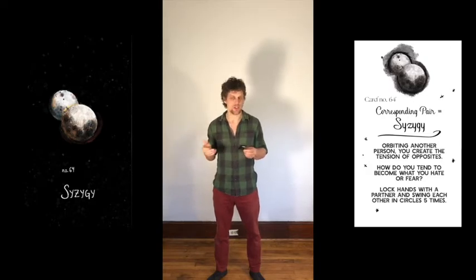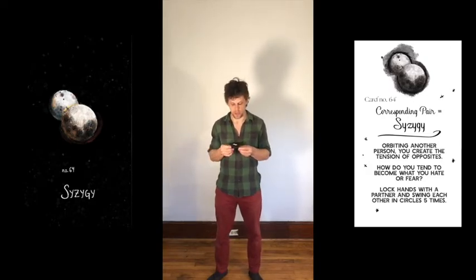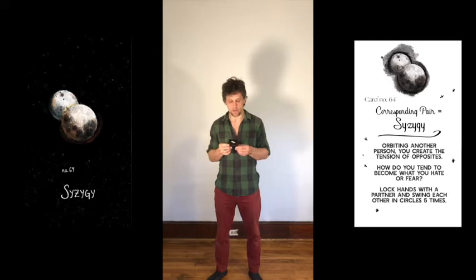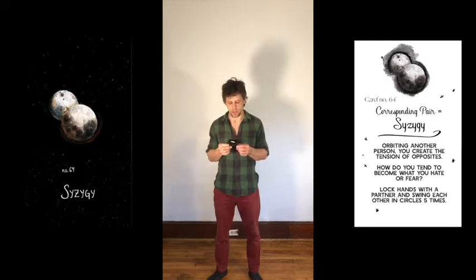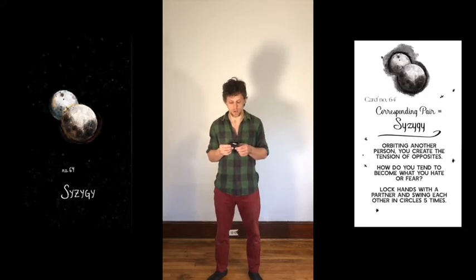Syzygy is a corresponding pair. So, orbiting another person, you create the tension of opposites. How do you tend to become what you hate or fear? Lock hands with a partner and swing each other in circles five times.